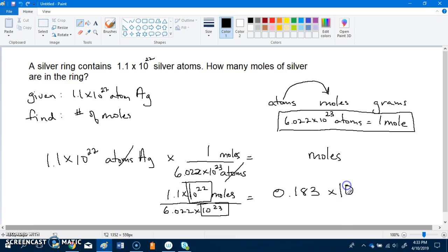And then you're going to divide 10 to the power of 22 divided by 10 to the power of 23. And whenever you're dividing powers of 10 you just subtract the denominator from the numerator. So you're going to have 22 minus 23, that's going to be your power, and that will be in moles. So you get 0.183 times 10 to the power of negative 1.